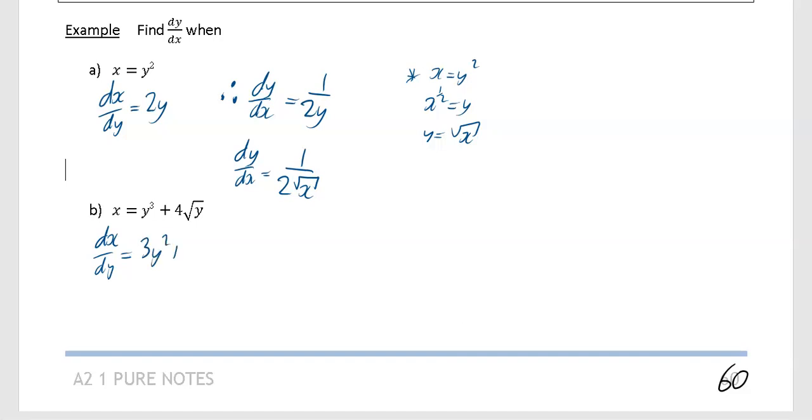You're going to get 3y squared plus, this I should have said here, that we have 4 square root of y, which is the same as 4 times y to the power of a half. So if you differentiate 4y to the power of a half, you're going to get 2y to the power of minus a half.